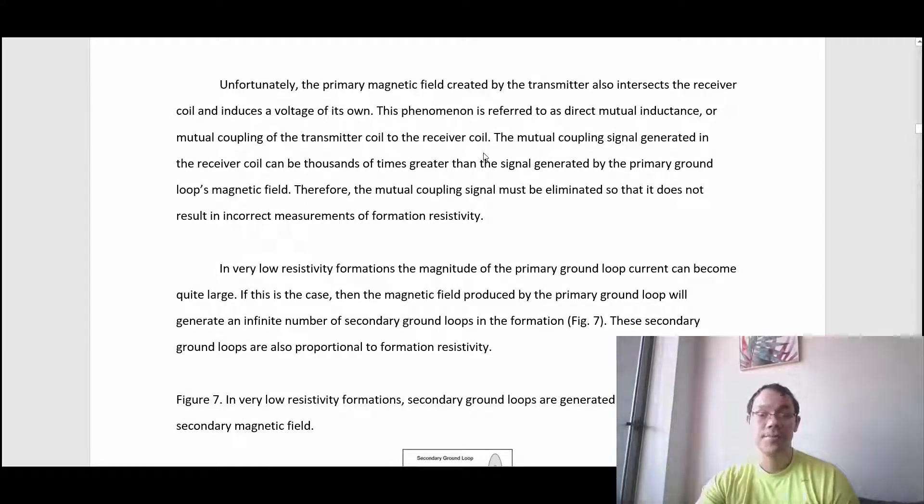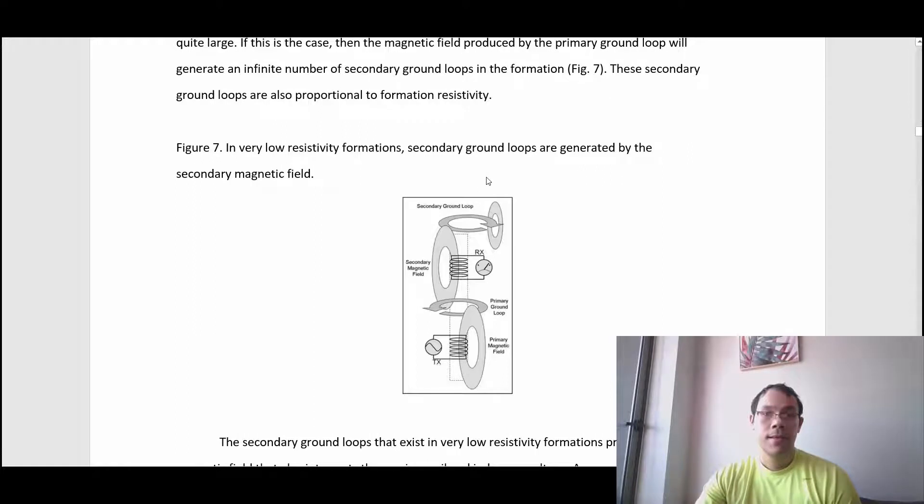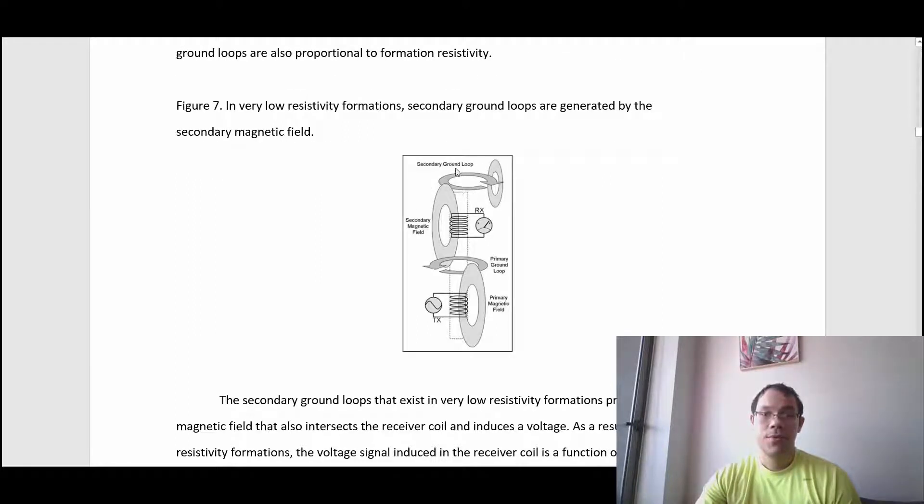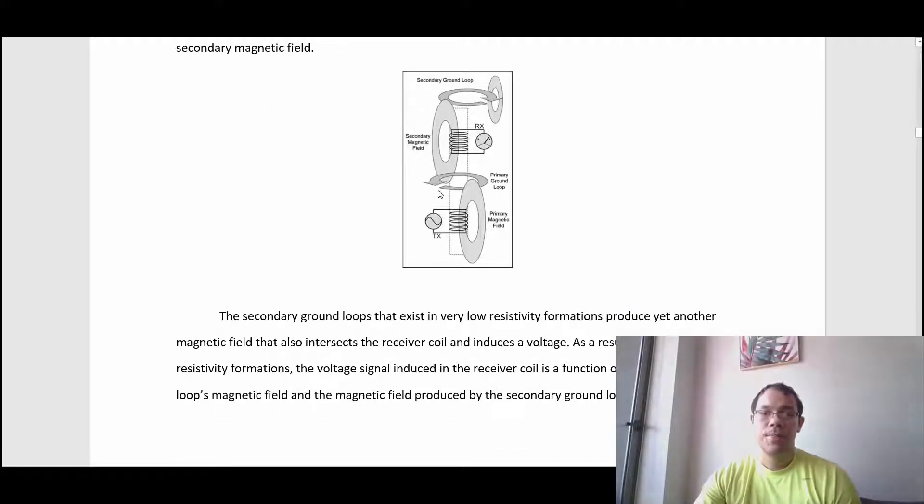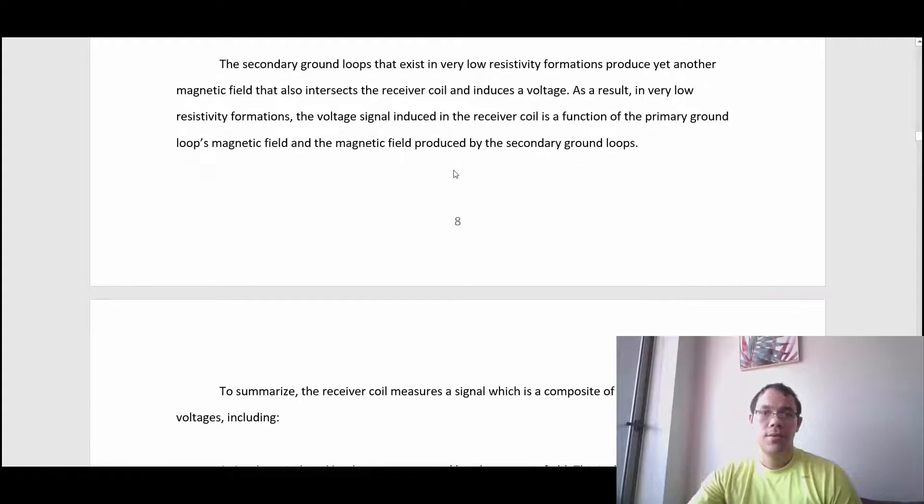That is an ideal scenario, because in reality there are a bunch of other things happening there. In this graph, you can see in very low resistivity a secondary ground loop is created, and that is not good. You don't want that because this happens in low resistivity formations and is going to provide your receiver information that is not related to the true properties of the formation. So you just want to find a way to measure that and correct your values.